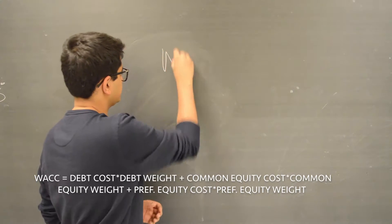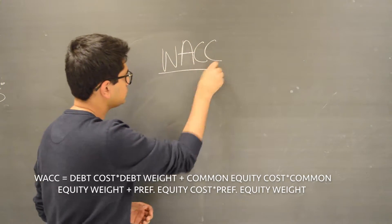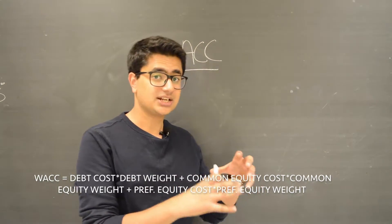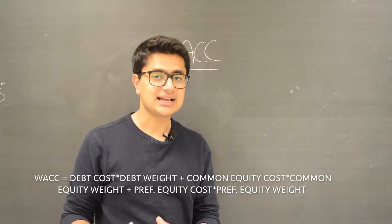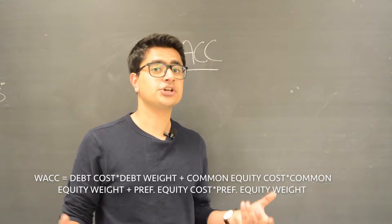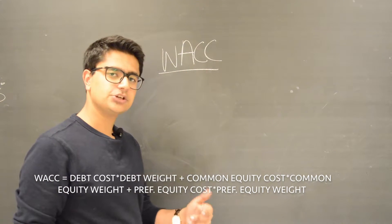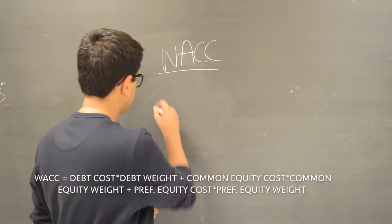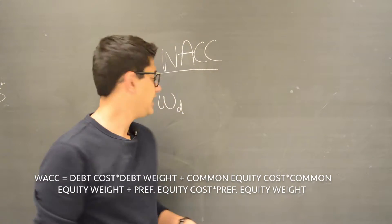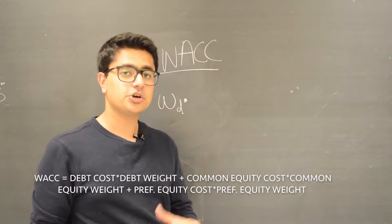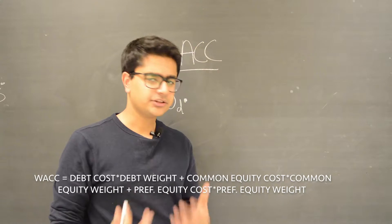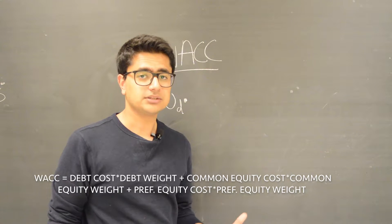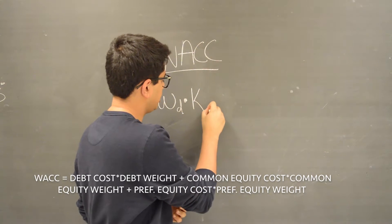The weighted average cost of capital is exactly what it sounds like. You take the weight of how much debt a company has, the weight of how much equity it has, and multiply both by their respective required return, then add them together. For example, let's say a company has 60% debt — that's the weight of debt — and you multiply that by the interest rate on outstanding debt, or the yield to maturity on outstanding bonds. That gives you the debt portion of the cost of capital.